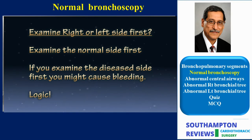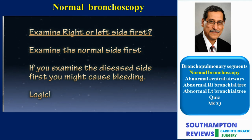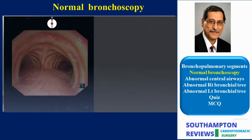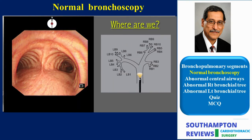The question arises here as to whether we should examine the right or the left bronchial tree first. The principle is to examine the normal site first, because if the disease site is examined first this might cause bleeding which we might regret. It might either prevent complete examination of the airways, or worse still, dictate drastic measures to stop the bleeding and abandon the original plan of resection.